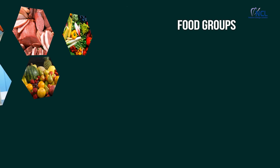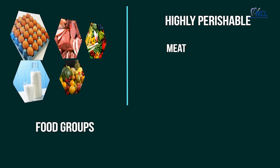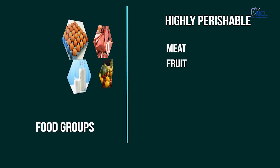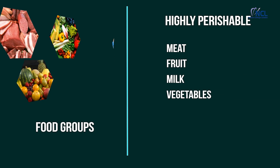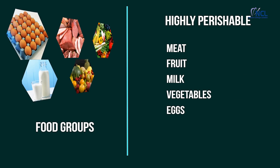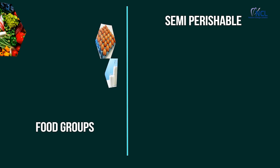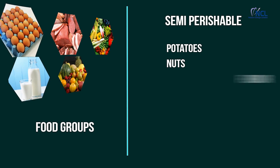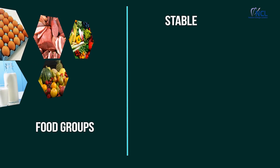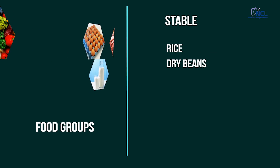Food can be grouped into highly perishable — like meat, fruit, milk, vegetables and eggs — semi-perishable like potatoes, nuts and flour, and staple like rice and dry beans.